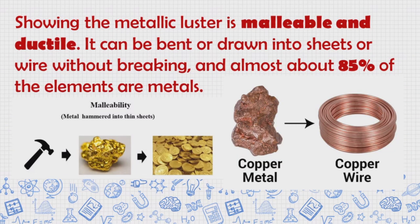Showing the metallic luster is malleable and ductile. It can be bent or drawn into sheets or wire without breaking. And almost about 85% of the elements are metals.